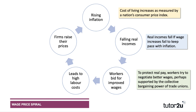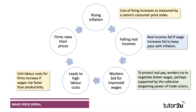Workers may try to negotiate better wages, perhaps supported by the collective bargaining power of unions, who try to bid for improved pay and conditions collectively on behalf of their members. Well, if they're successful and wages go up, that's going to lead to higher labour costs. The unit labour cost will go up if wages rise faster than productivity. For example, if wages rise by 5% but productivity has only increased by 2%, then unit labour costs approximately increase by 3%.